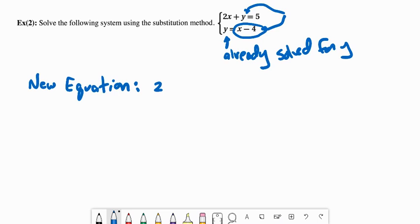So it's 2x plus, and anywhere I see y, I'm going to replace it with x minus 4 from the second equation, equals 5.